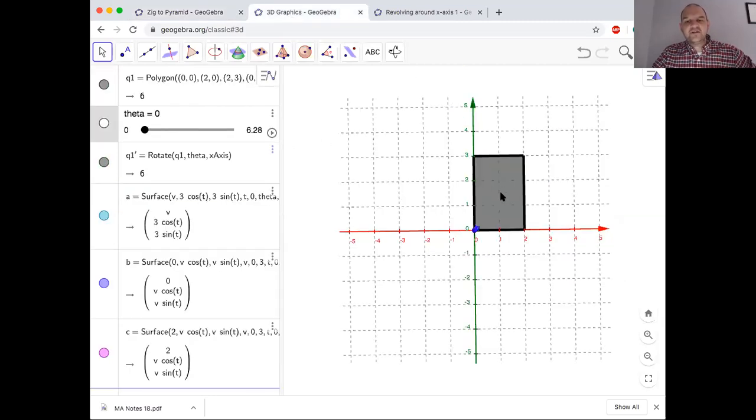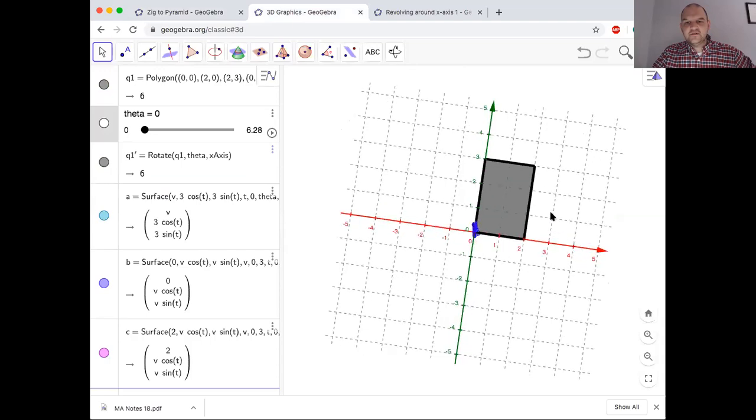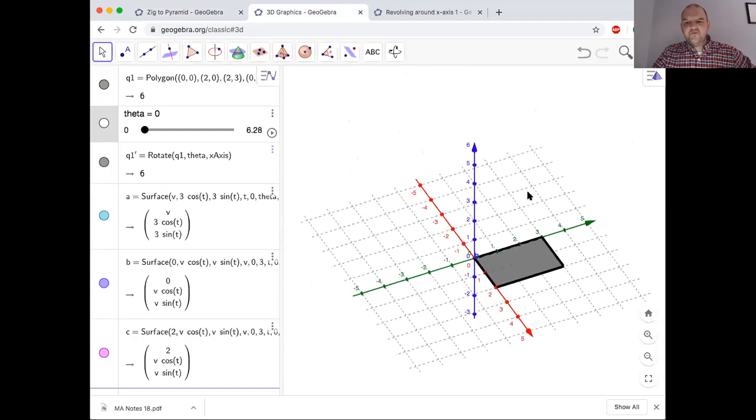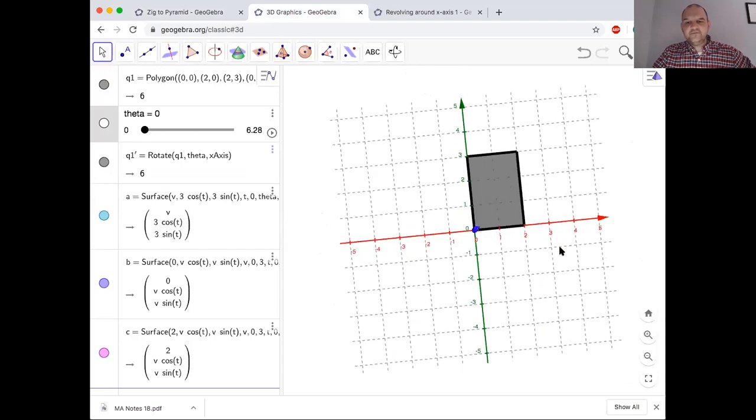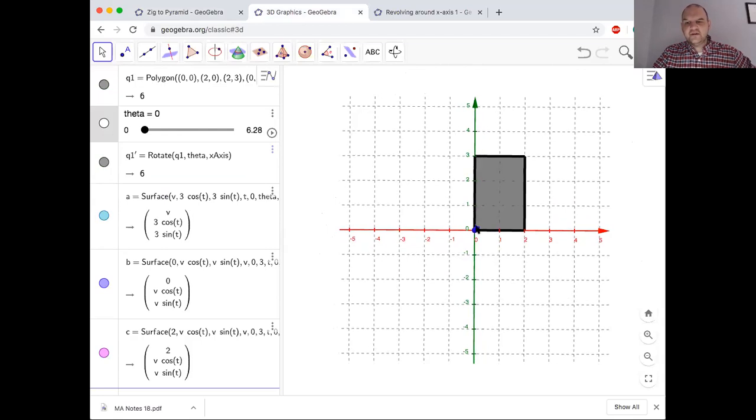A second idea we want to deal with is: if we take this rectangle in the xy plane—it goes from 0 to 2 for x, 0 to 3 for y—and rotate it around the x-axis, in your mind think what shape you're going to get. If you did the problems at the end of the last set of notes, you know you're going to get a cylinder.